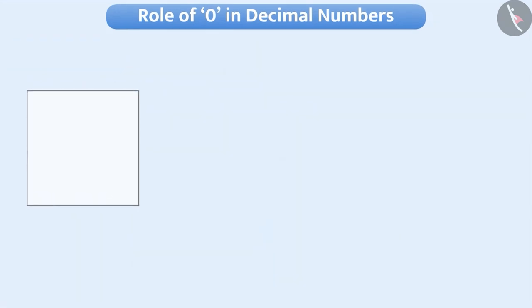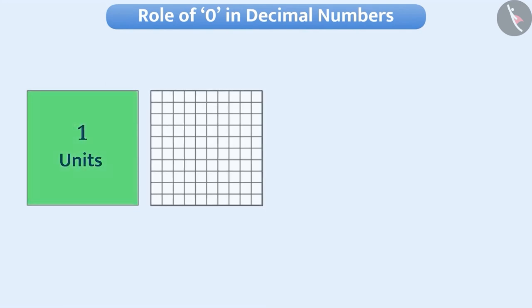Suppose we consider a large square as one unit. Then, how will we represent the decimal form if we consider one whole square and consider nine parts out of hundred parts of a whole square? Pause the video and think about it.